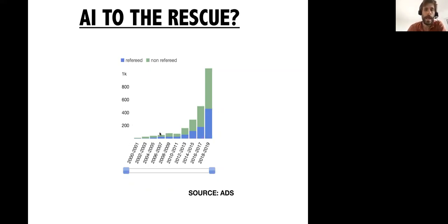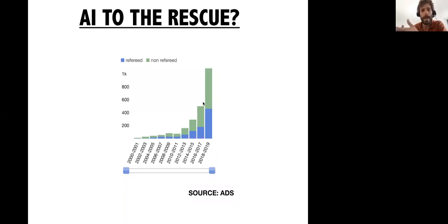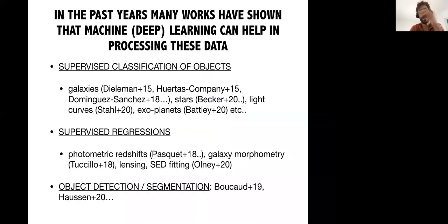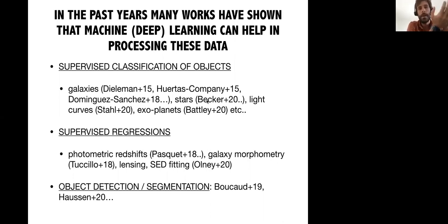This is reflected in the number of papers in the ADS database that mention machine learning in the abstract — there's a steady increase in parallel with this big data revolution. What people have been doing is saying: I have this problem, I have this huge amount of data and complexity — let's see how machine learning can handle that particular problem. We are still at this stage, at least in the past years, of experimentation: let's try to see how it behaves for that particular problem. I think in the past years, many works have shown that machine learning, especially deep learning, can indeed be one way to process this data and help making these tasks efficiently.